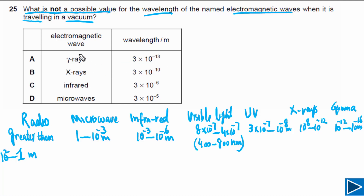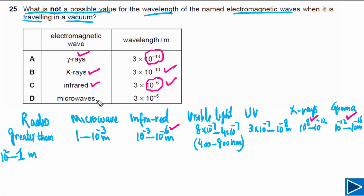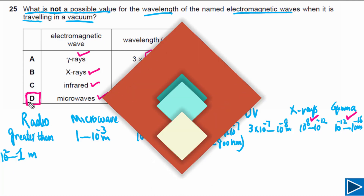Checking the given values: gamma rays at 10⁻³ — wait, that falls in infrared/microwave range, but let's verify each option. X-rays at 10⁻¹⁰ is within the X-ray range — correct. Infrared at 10⁻⁶ is within the infrared range — correct. But microwave given as 10⁻⁵ falls in the infrared range, not the microwave range. So 10⁻⁵ m is not possible for a microwave. The answer is D.